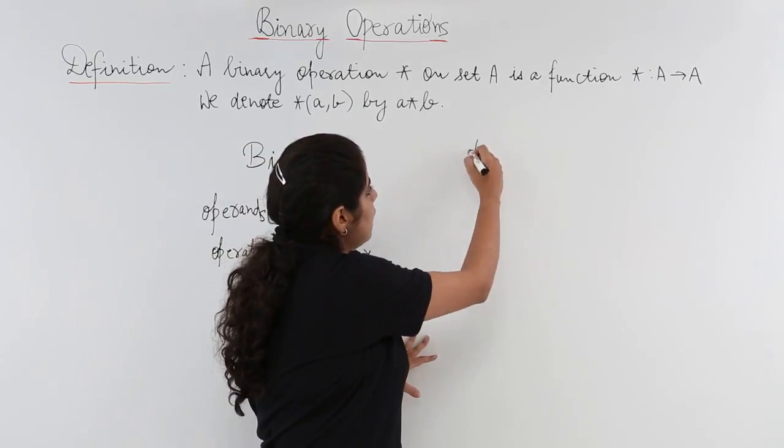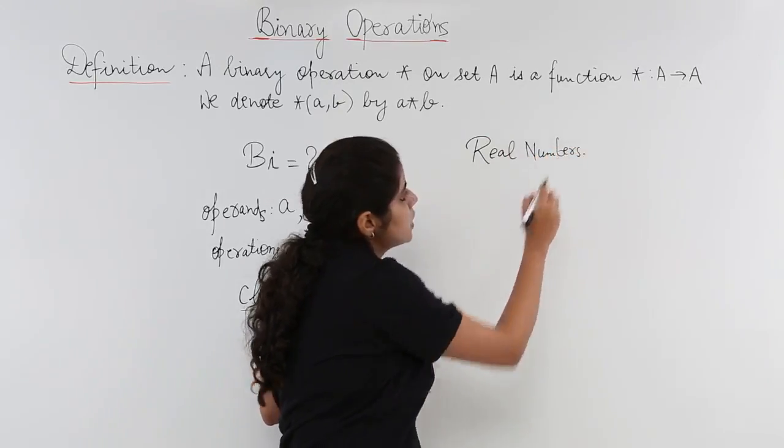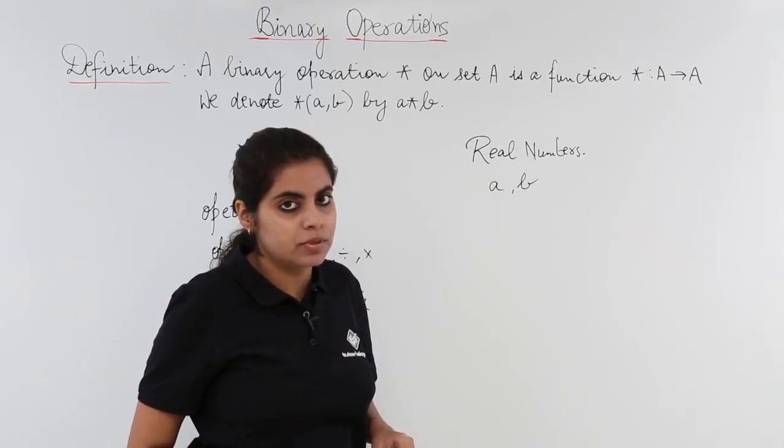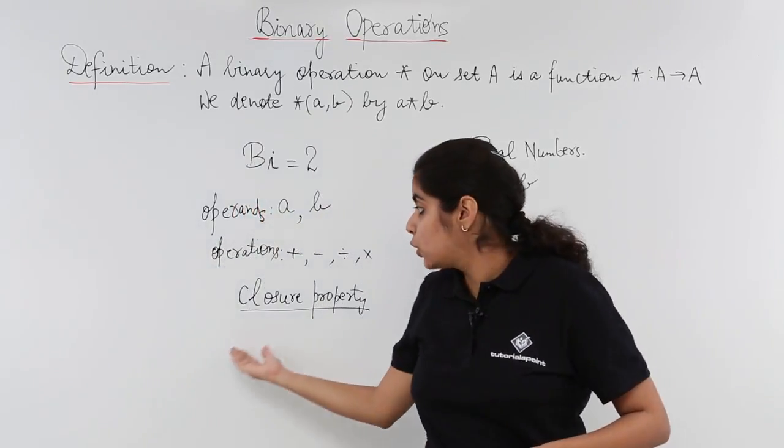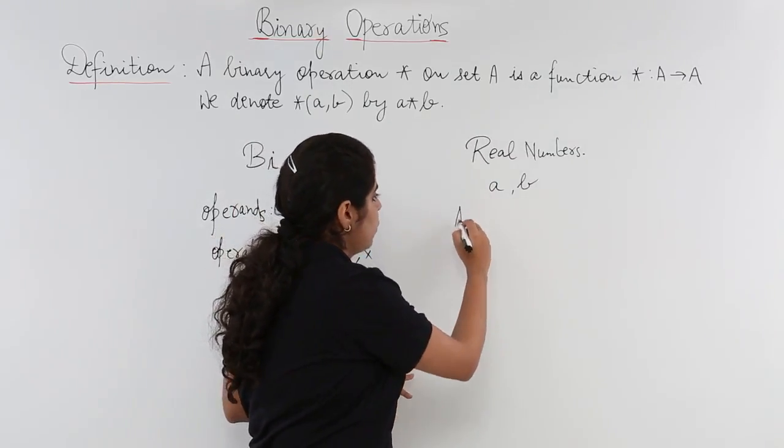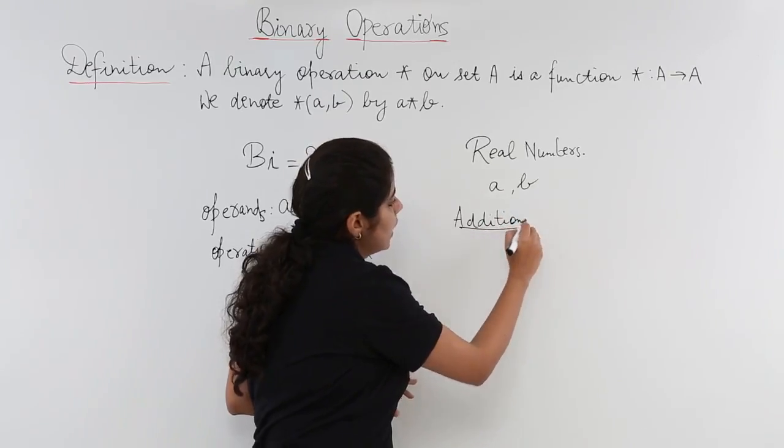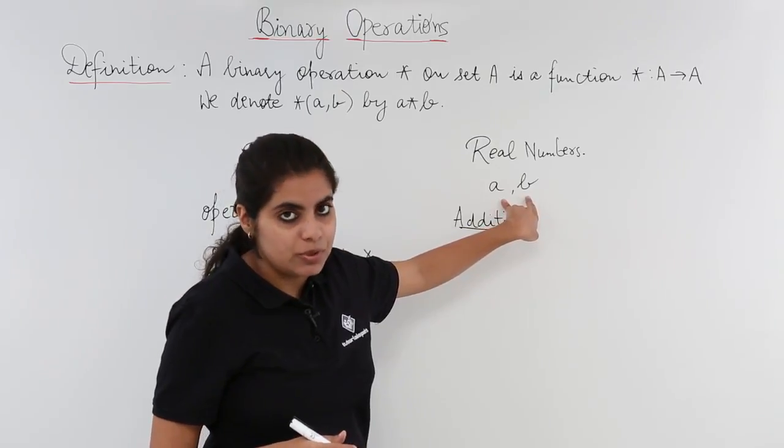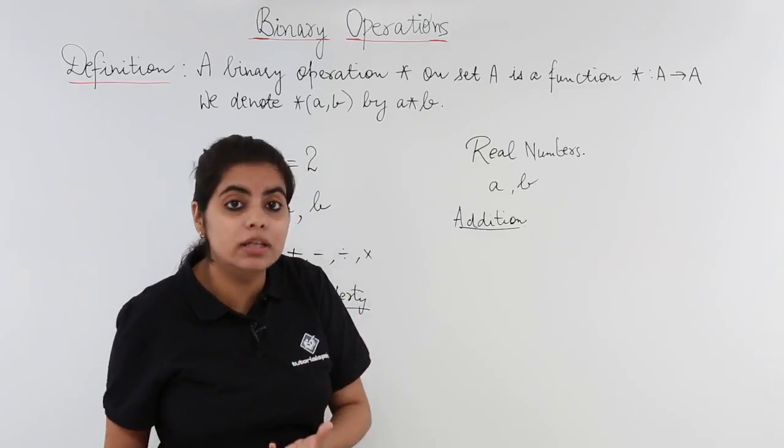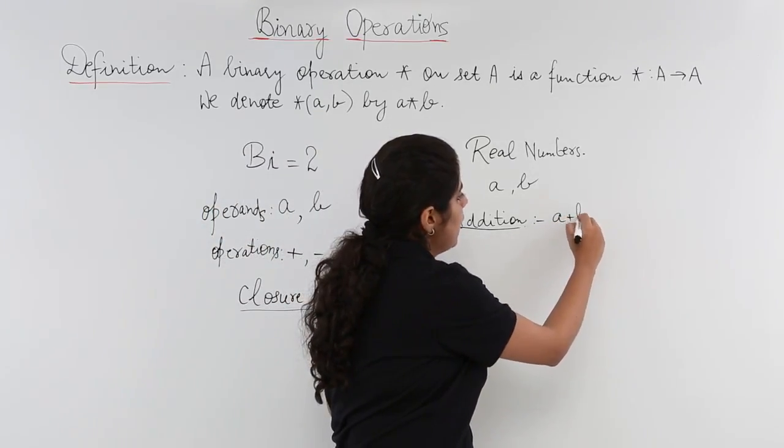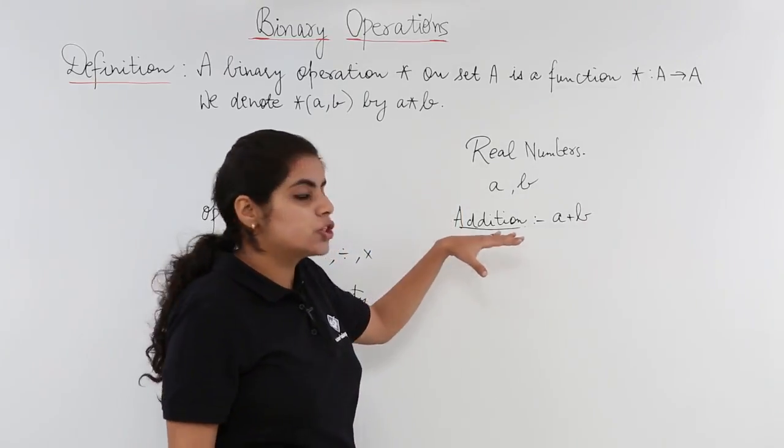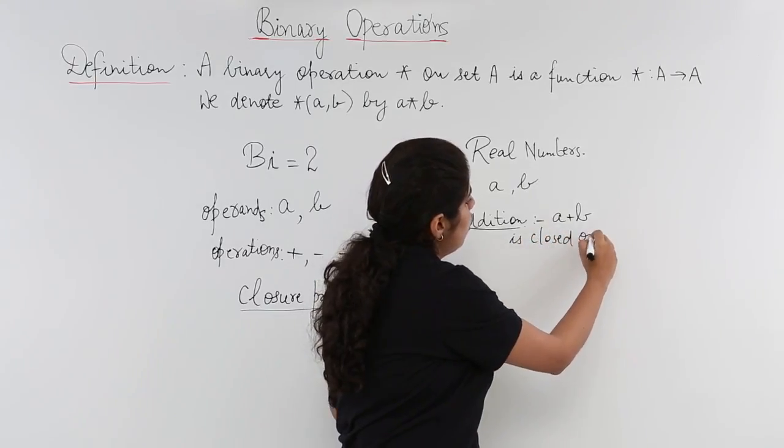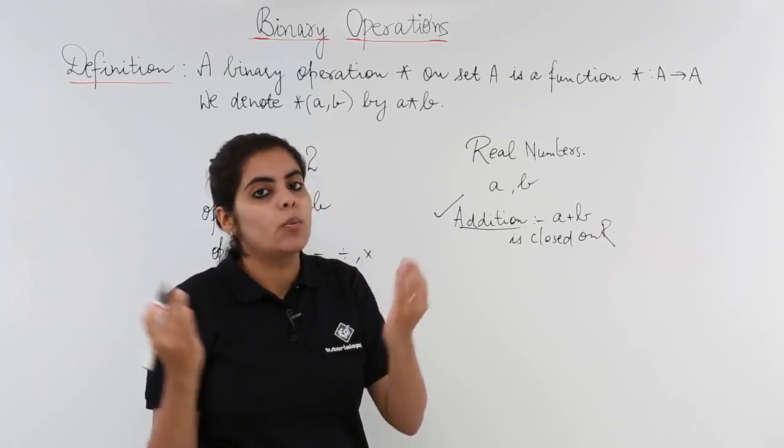Suppose I'm talking about real numbers. I have two operands A and B, both real. We have to check whether addition is closed on R. What does closed on R mean? If I have two numbers which are already real, does the operation give me a real number? Yes, A and B when added will always give real numbers. So addition is closed on R because two real numbers added together give a real number.